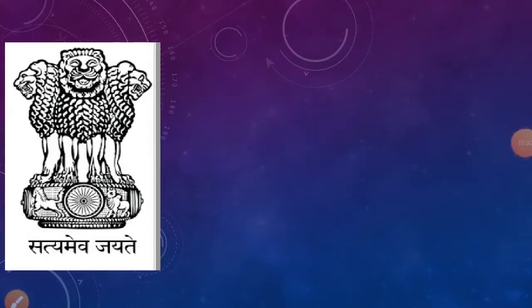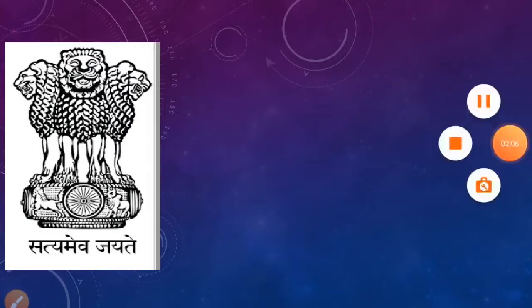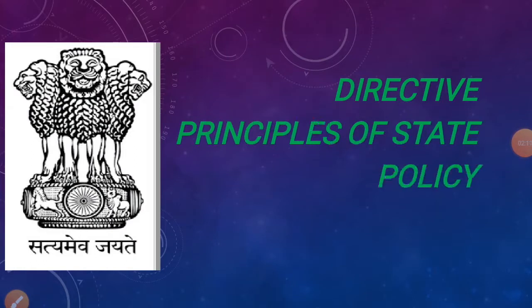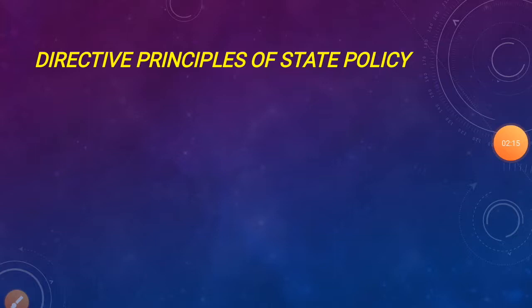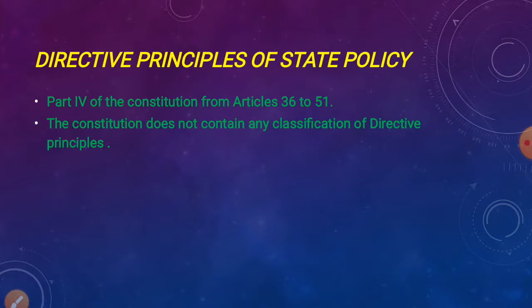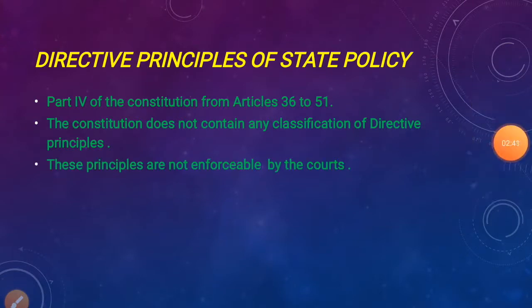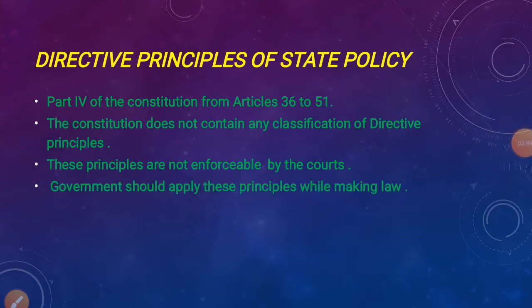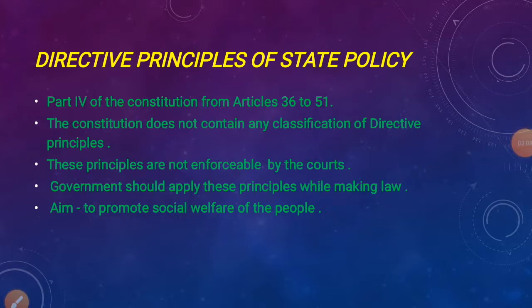Let's start today's portion. Today we are going to learn about Directive Principles of State Policy. The Directive Principles of State Policy are enumerated in Part 4 of the Constitution, from Articles 36 to 51. The Constitution does not contain any classification of Directive Principles. These Directive Principles are not enforceable by court, but they are fundamental for the governance of the country. The government is duty bound to apply these principles while making laws. They aim at promoting the social welfare of the people.